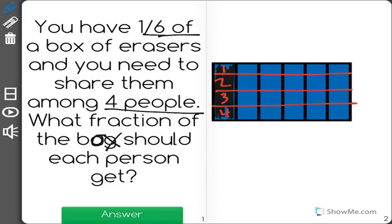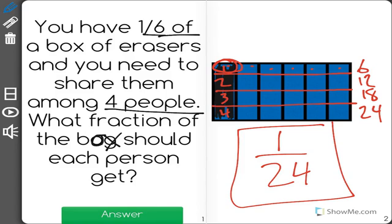Now the question is what fraction of the box would each person get? Well each person would only be getting one little part of this, and out of the whole box we now have one, two, three, four, five, six. There are six in each row, so we have a total of 24. So each person would only get one twenty-fourth of the total box.